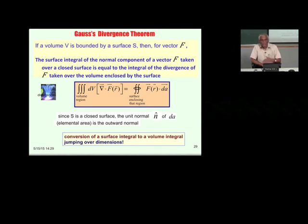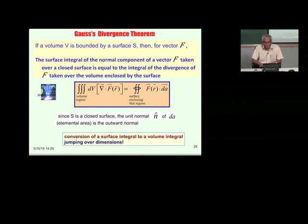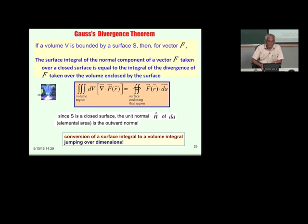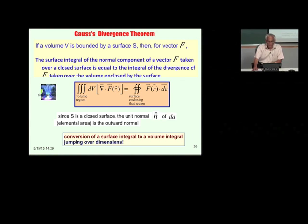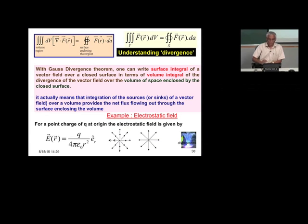Now we have Gauss's Divergence Theorem. It connects the volume integral to the surface integral. The surface integral of the normal component of the vector F taken over a closed surface equals the integral of the divergence of F taken over the volume enclosed by the surface. These surface and volume are related to each other — it is not any arbitrary surface. The surface integral of a vector field is related to the volume integral of the divergence of that vector field.